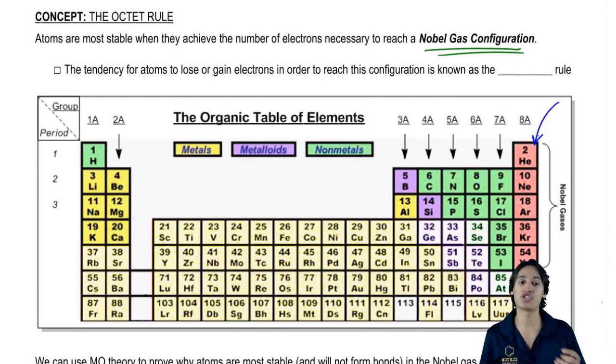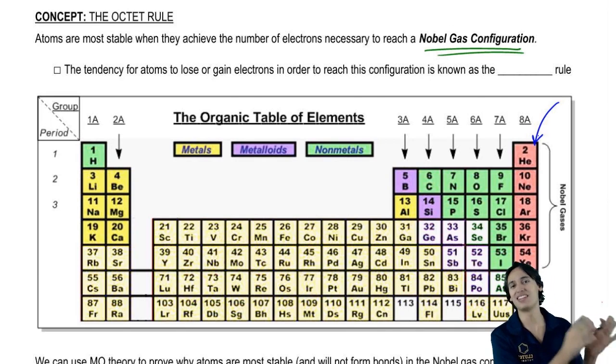You can think of all the other atoms as just trying to get to that red state in terms of the stability of the noble gases.